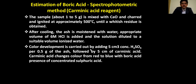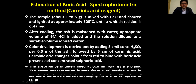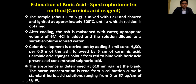Color development is carried out by adding 5 cm³ of concentrated sulfuric acid per 0.5 gram of ash, followed by 5 cm³ of caraminic acid. Caraminic acid changes color from red to blue in the presence of boric acid and concentrated sulfuric acid. The absorbance is determined at 610 nanometers against a blank, and the boron concentration is read from a calibration curve using standard boric acid solutions ranging from 0 to 57 micrograms per cm³.